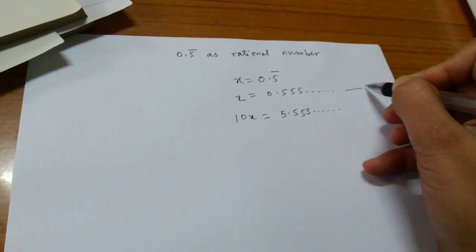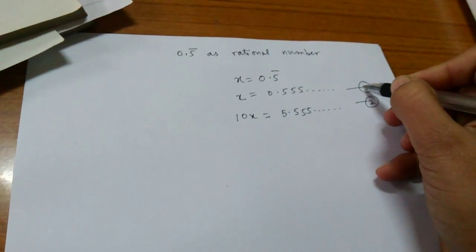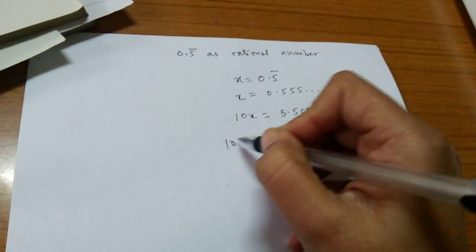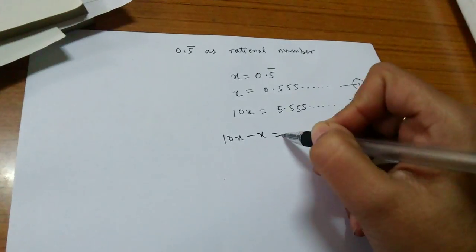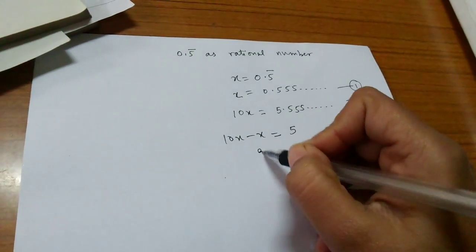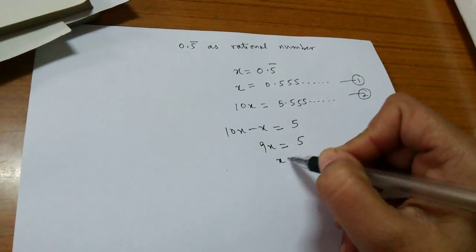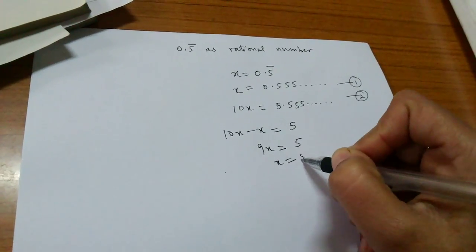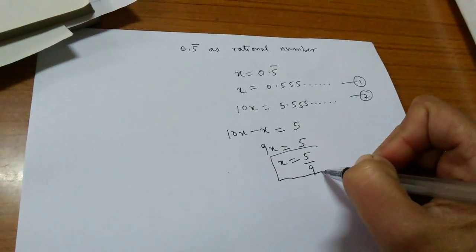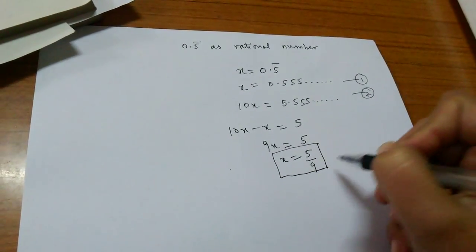Number this as 1 and this as 2. Subtracting 1 from 2, we get 10x minus x is equal to 5. That is 9x equals to 5. That is x is equal to 5 by 9. This is the required representation.